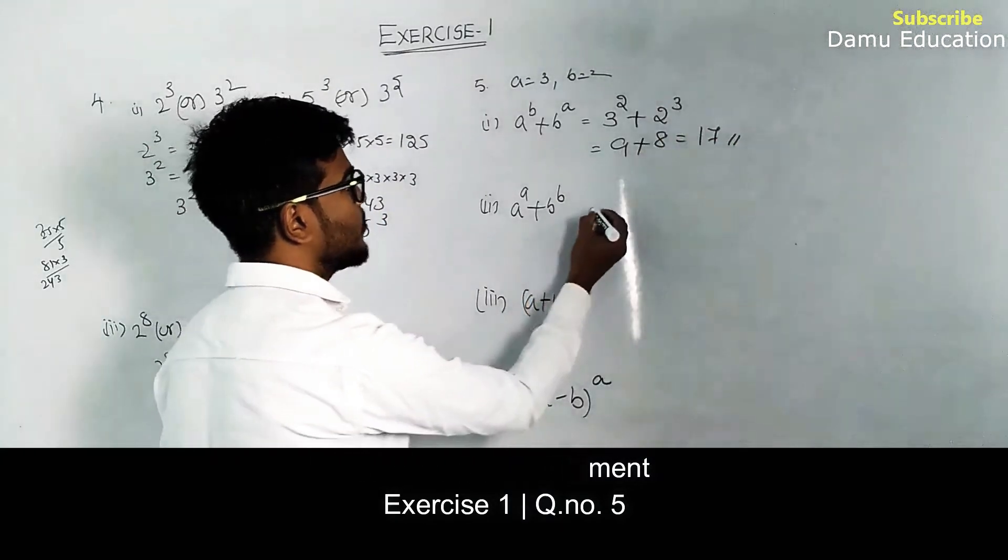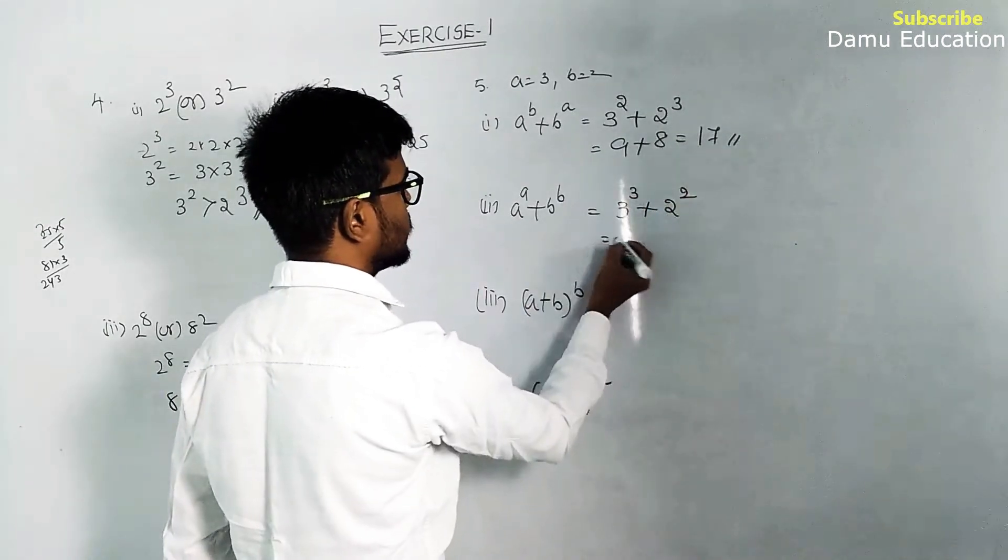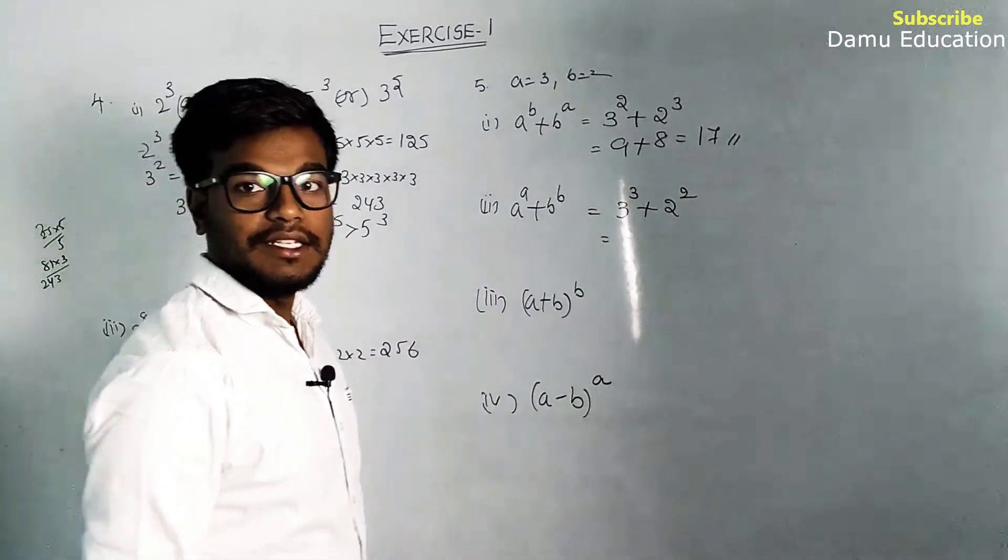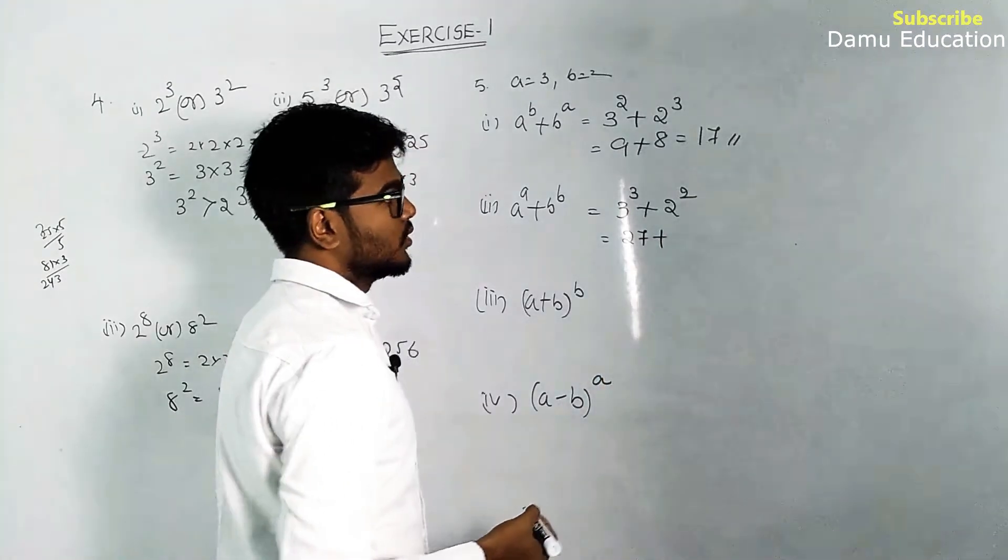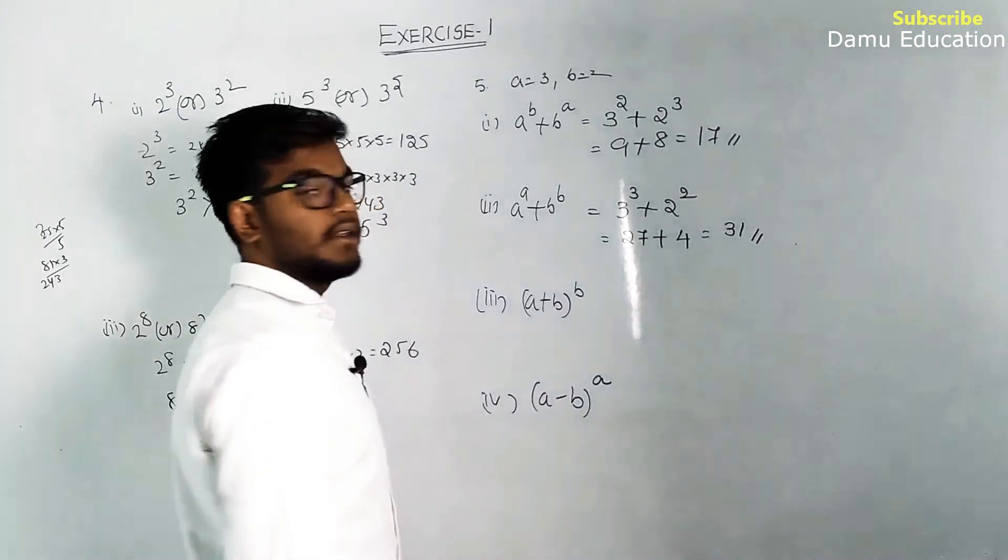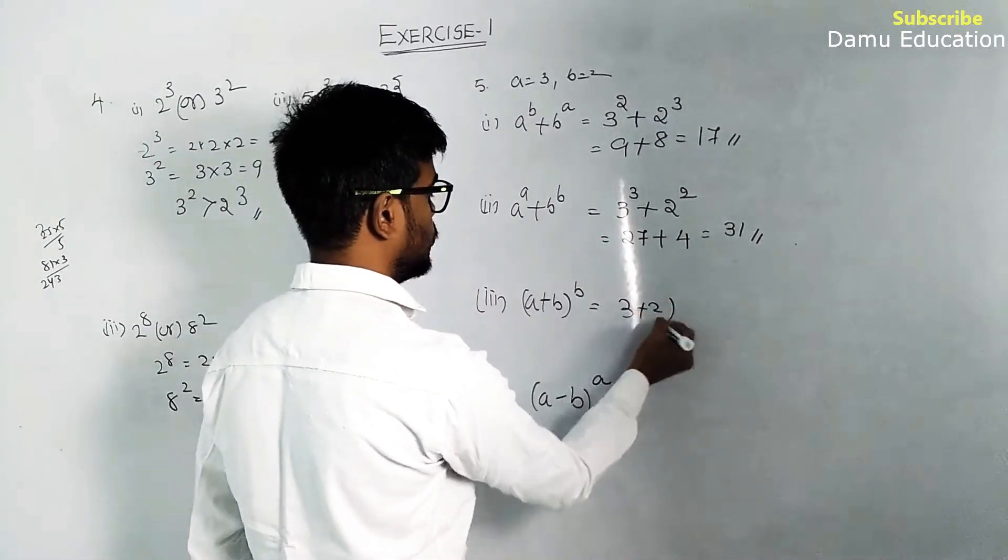Part (ii): a³ + b², which is 3³ + 2². 3³ equals 27, 2² equals 4, so it will equal 31.